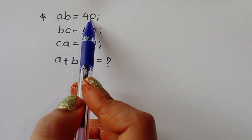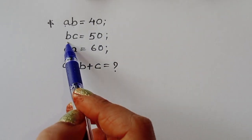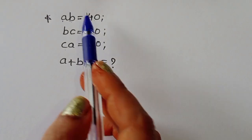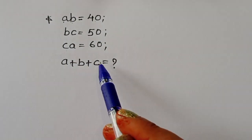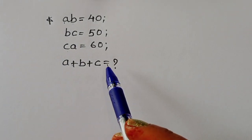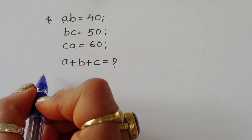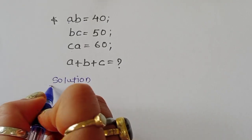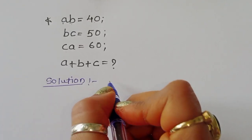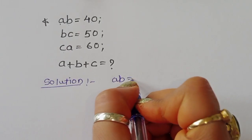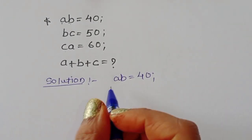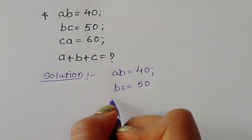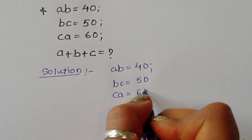We are given ab = 40, bc = 50, and ca = 60. We have to find out the value of a + b + c. Let's see the solution.